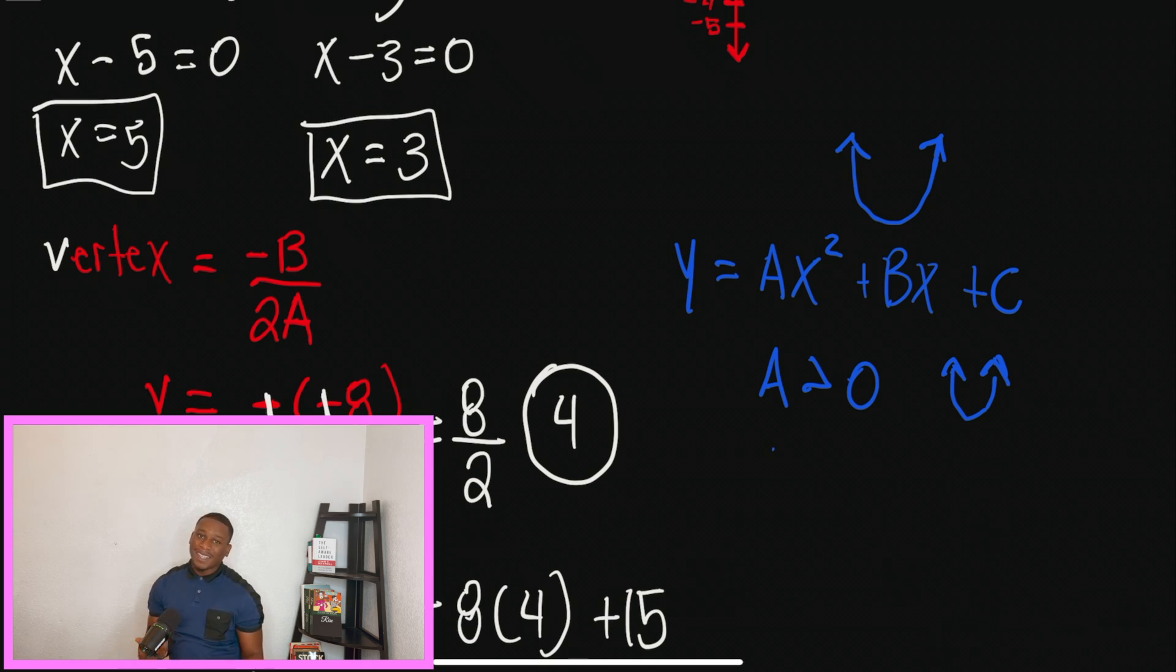However, if A is negative or if A is less than zero, that means our graph is going to open down.